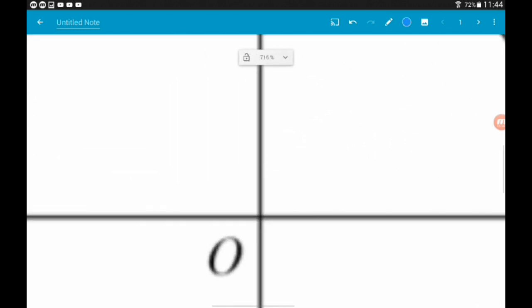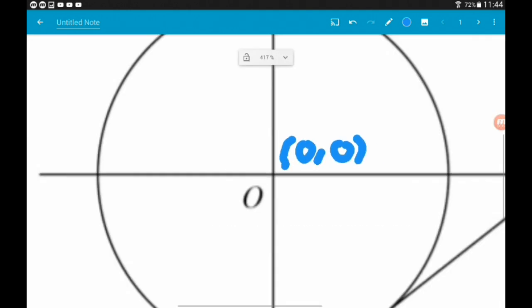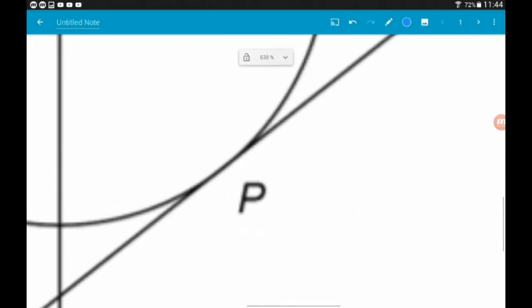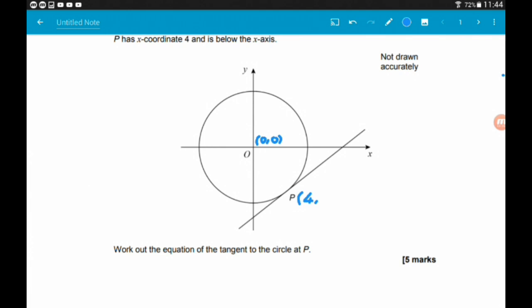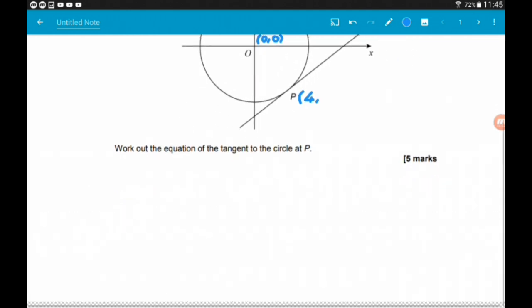We know the centre of the circle here is 0, 0 and we also know the x-coordinate down here at point P is 4. Now, we don't know the y-coordinate. What we do know though is that point P lives on the circle and on the tangent. We can use the fact that it lives on the circle to work out the y-coordinate of point P. That's the first thing that we are going to do.